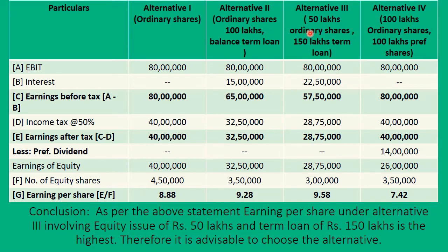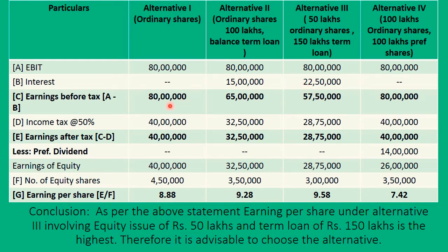For Alternative 3, the borrowed amount is 150 lakhs at 15%, so 15% of 150 lakhs gives interest of 22 lakhs 50 thousand. In Alternative 4, the funds are raised through equity and preference shares with no borrowing, so interest is nil again. After deducting these interest amounts from EBIT, we get earnings before tax (EBT): 80 lakhs, 65 lakhs, 57 lakhs 50 thousand, and 80 lakhs respectively.